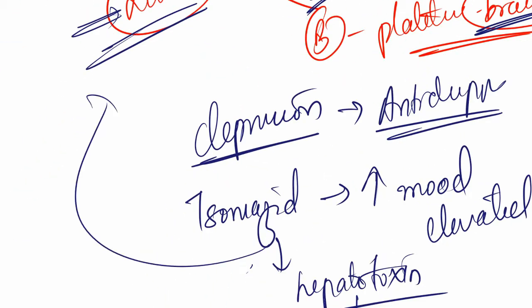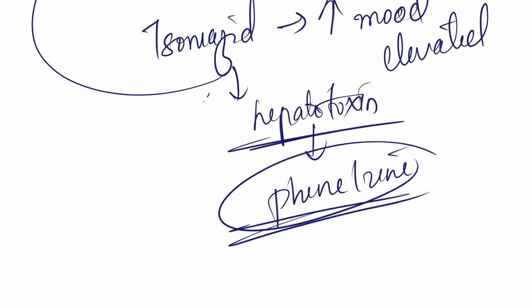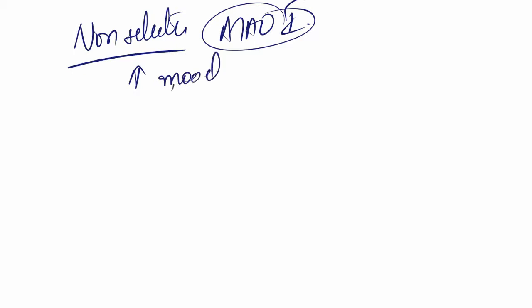We have non-selective MAO inhibitors. What they do is they elevate mood, of course. If you continue to give them it will lead to a little more elevated mood leading to hypomania, and it will lead to a little more elevated mood leading to mania. That was one of the problems.